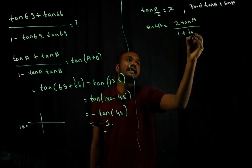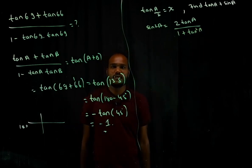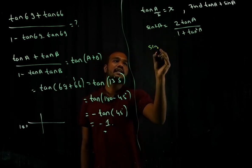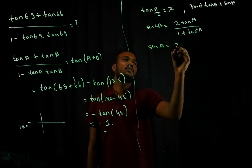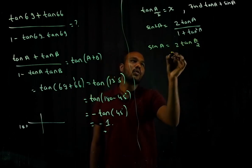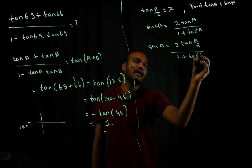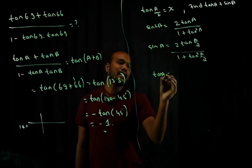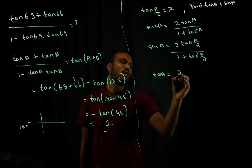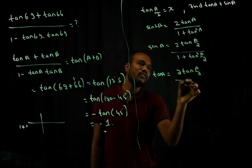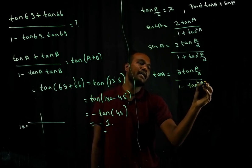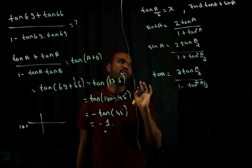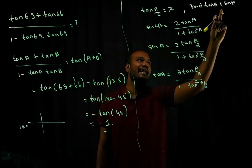Also, tan A in terms of A/2 is 2 tan(A/2) / (1 − tan²(A/2)). If you do not know these two formulas, the question cannot be solved easily. We're asked to find tan A + sin A, where tan(A/2) = x.